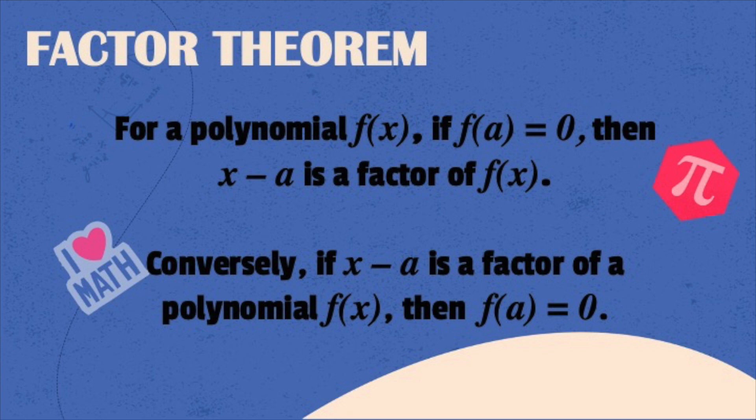In relation with the factor theorem, conversely, we can say if x minus a is a factor of a polynomial f of x, then we can say that f of a is equal to 0. Meaning to say, when you have a binomial divisor and f of a becomes 0, the binomial or the divisor is considered as one of the factors for the given f of x.